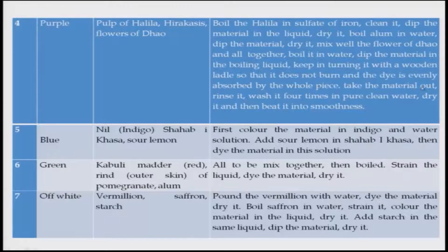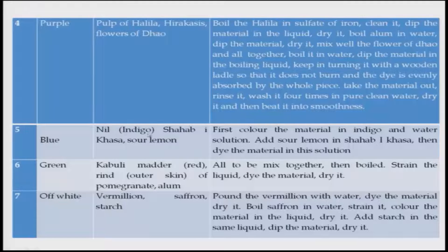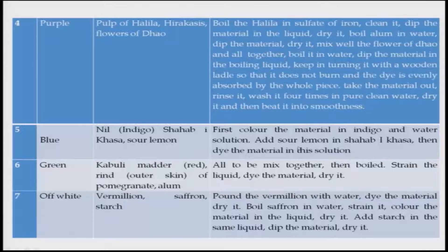Take the material out, rinse it, wash it four times in pure clean water, dry it, and then beat it to smoothness. For blue color, you can get it from indigo — neel — which is basically from India — with saib hikasa and sour lemon. First colour the material in an indigo and water solution, then add sour lemon in the saib hikasa and dye the material in this solution. Different procedures are given for different colours — one has to appreciate that.